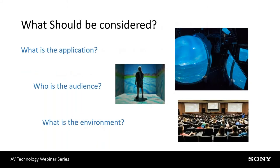Some things that should be considered are the application: What am I trying to do? Am I trying to entertain, inform, grab somebody's attention, create an environment, or basically just lecture? What are we trying to accomplish, and who is the audience? Probably the most important aspect is where is it going to go — what is the environment the projector will be used in? The specifications can tell you what the projector can do, but they have to be taken into account with the environment it will be used in.